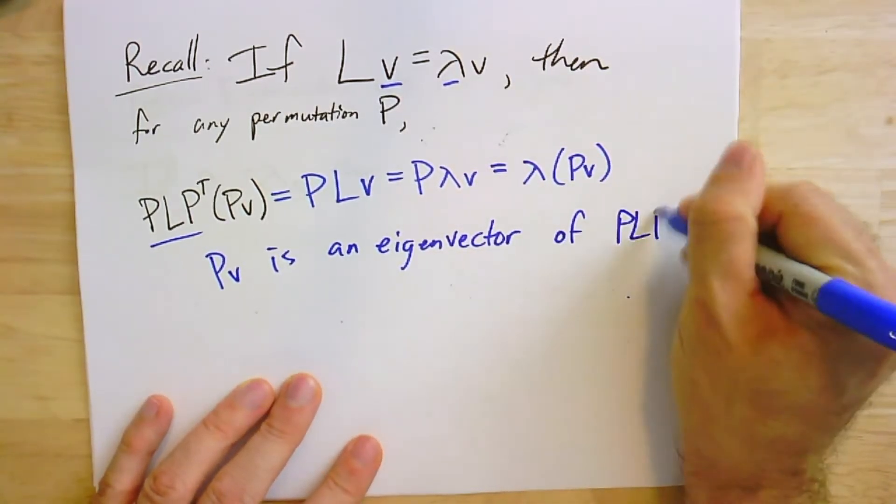I'll get P times Lv, which equals P times λv. I can pull the constant factor out, which is λ times Pv, which means Pv is an eigenvector of my new permuted matrix. And it's also an eigenvector with eigenvalue λ. So the eigenvalues don't change when I do this permutation. The eigenvectors get permuted exactly the same way I've permuted the rows and columns of L, which makes sense.